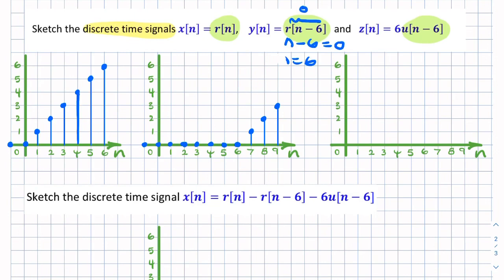Okay, so let's clean this up. So that's my second function. So that's my unit ramp, but it's been shifted by six samples.